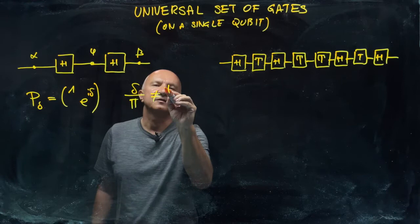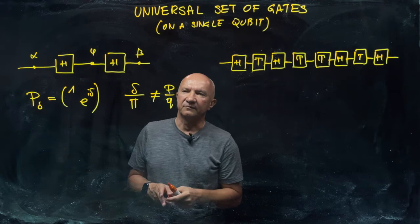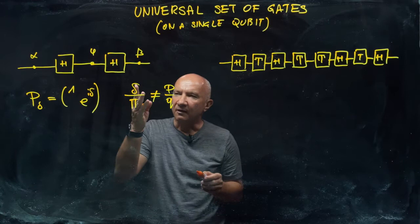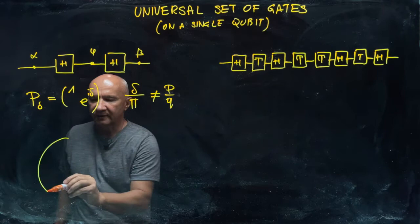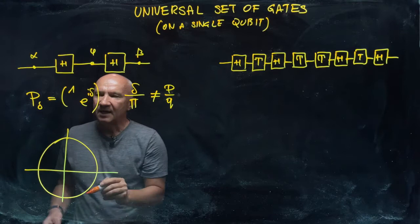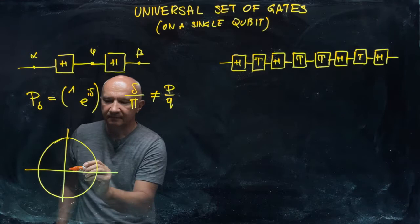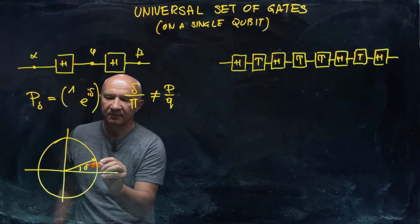You get something that is not a rational number. It's not a number that you can write as a ratio of p over q. Those are natural numbers. So all that means that if you... let me just visualize what I want to say, drawing a circle on the complex plane. So any application of this gate will induce rotation on this circle by delta.